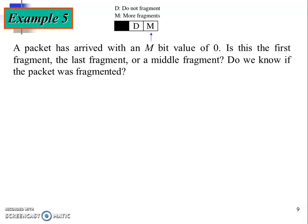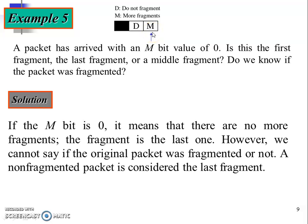Example five focuses on fragmentation. A packet has arrived with an M bit value of 0. Is this the first fragment, the last fragment, or a middle fragment? Do we know if the packet was fragmented? M = 0 means there are no more fragments — this is the last fragment. However, we cannot say whether the packet was originally fragmented or not, because the value of the D bit is not specified. A non-fragmented packet can also be considered as the last fragment.